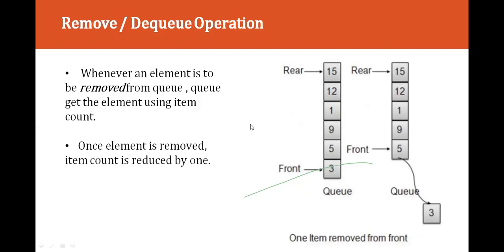Whenever an element is to be removed from the queue, we get the element using item count. Once an element is removed, item count is reduced by 1. Since the rear is 15, using the dequeue operation we remove from the front — the front number is 3.